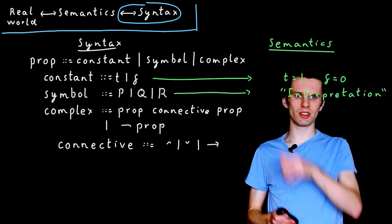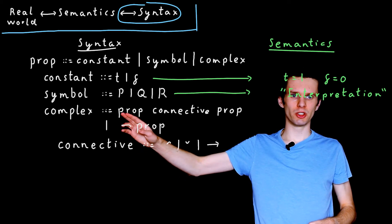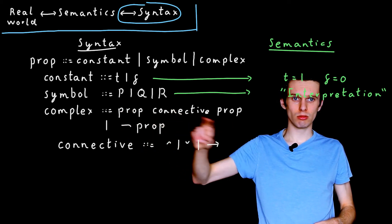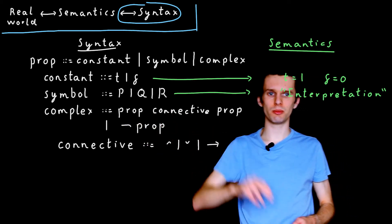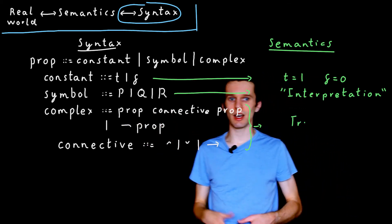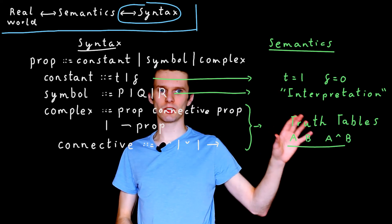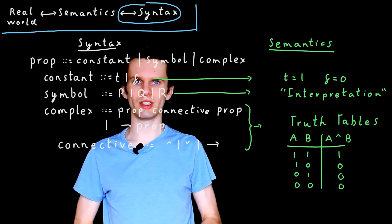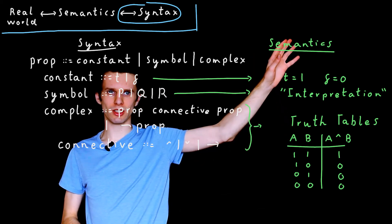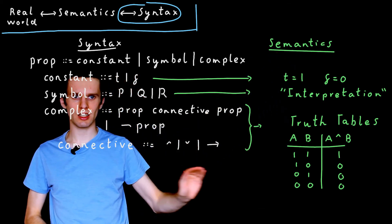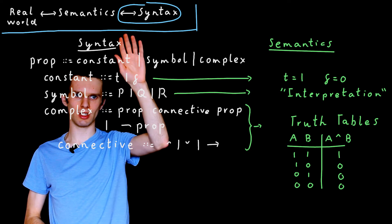Perhaps unsurprisingly, what we define as the connectives are the little hat symbol representing AND, the little v-shape representing OR, and the arrow representing implication. So this line here is saying we can have proposition A AND B, A OR B, or A implies B. And lo and behold, this brings us back to the truth tables that we saw in the last video. And the truth tables in the semantics define the meaning of these symbols in the syntax.